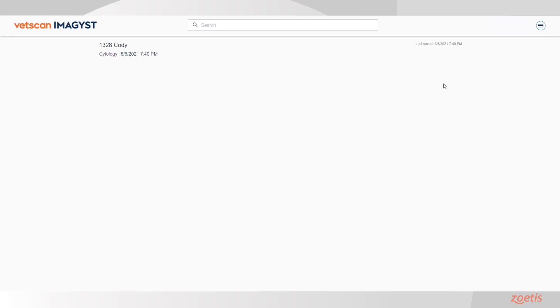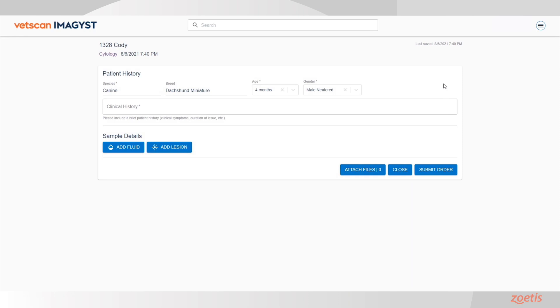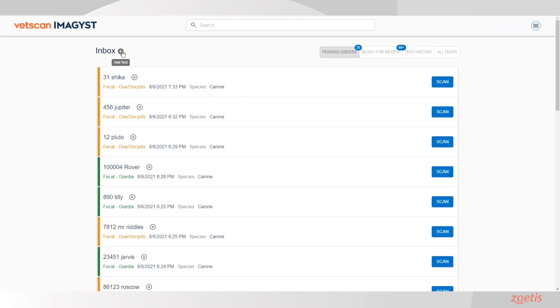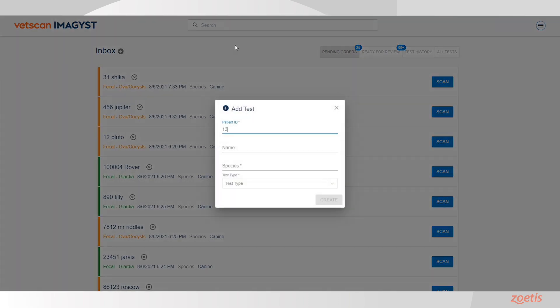Select Start for the correct sample. Sample information will become pre-populated from any fuse-connected software system. If no integration is available, select the Add New Test icon. Enter the required information and select Create.